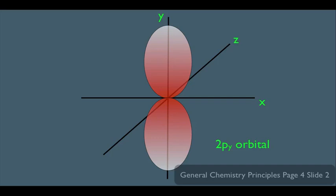Again, p tells us the shape. 2 tells us how far this orbital extends from the nucleus. And y is telling us it's on the y-axis. There is no such thing as a 1p orbital. The p orbitals always start in the second shell.